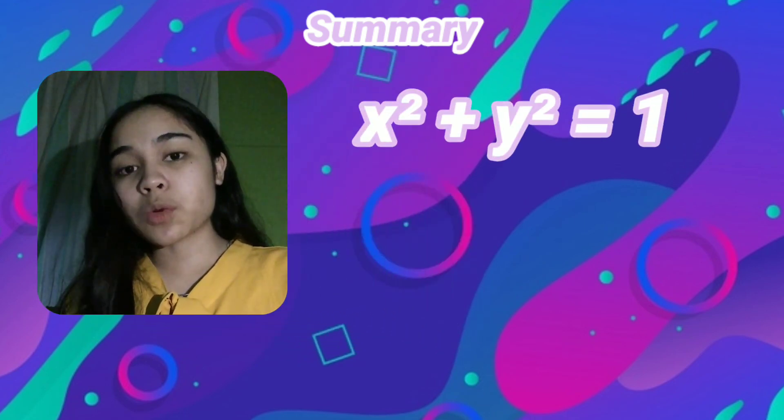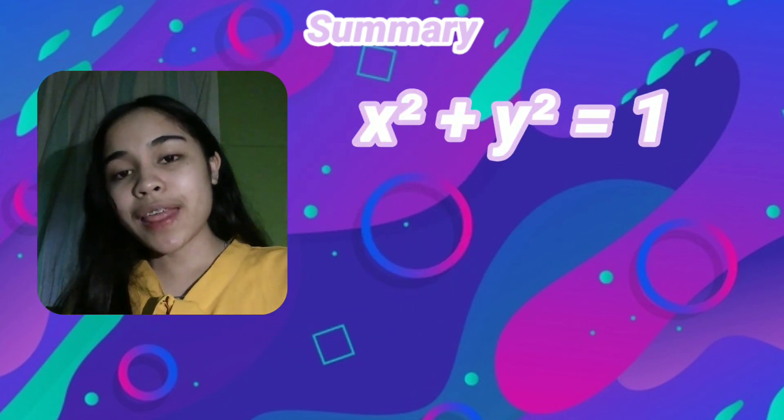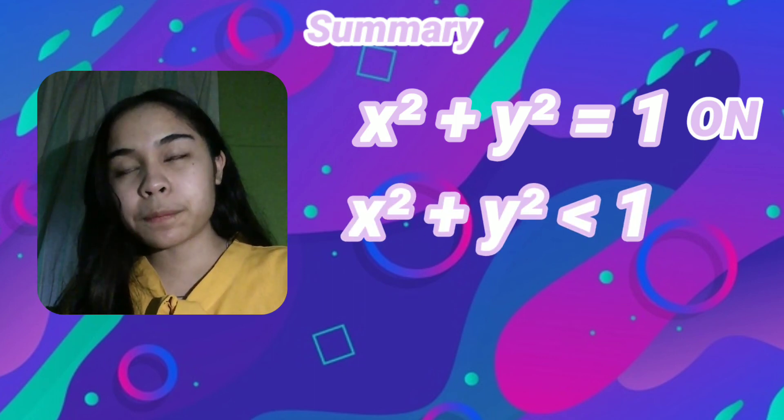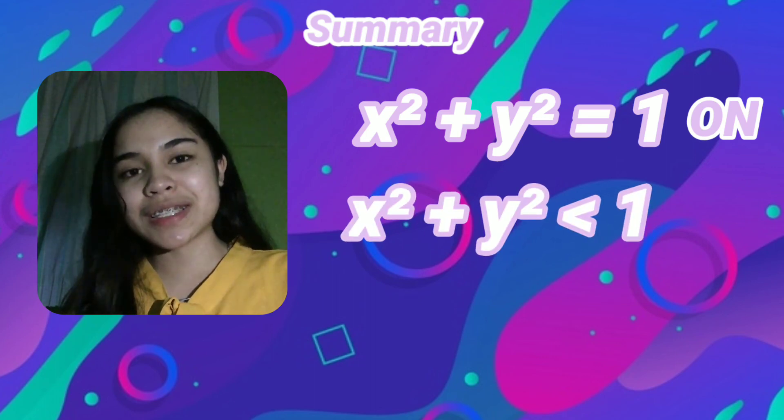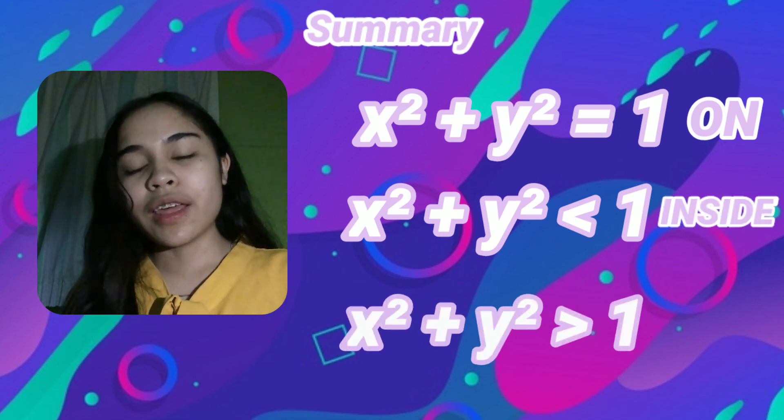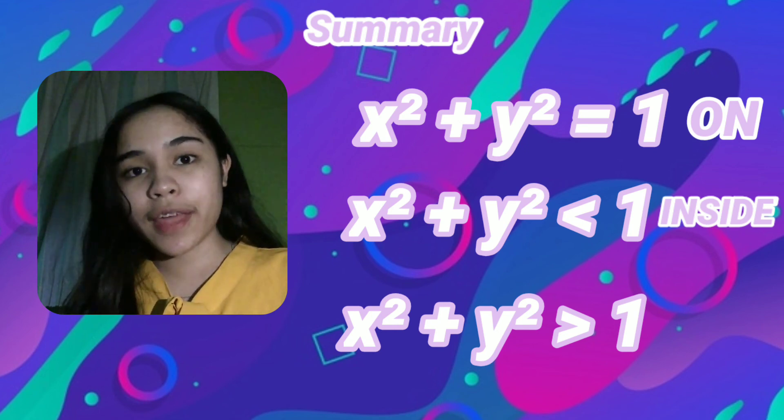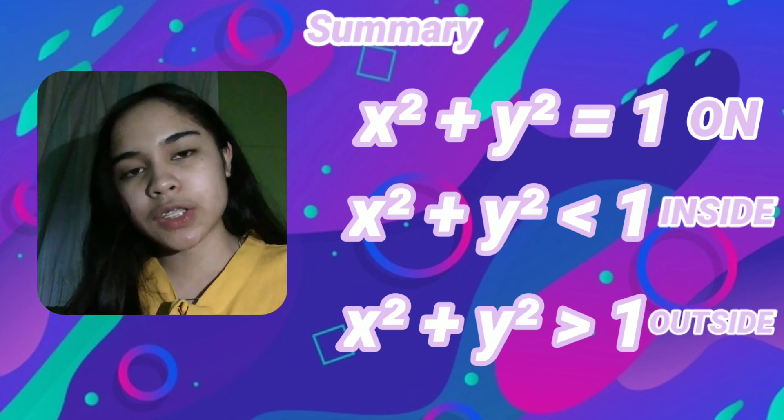If x² + y² = 1, then it is on the unit circle. If x² + y² < 1, then it is inside the unit circle. If x² + y² > 1, then it is outside the unit circle.